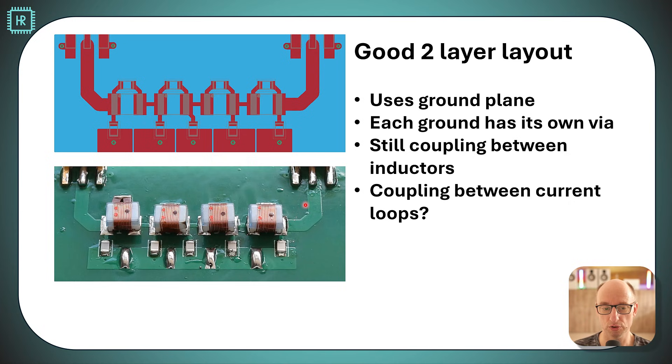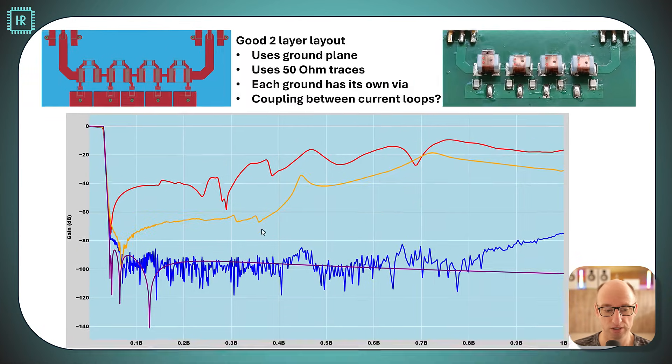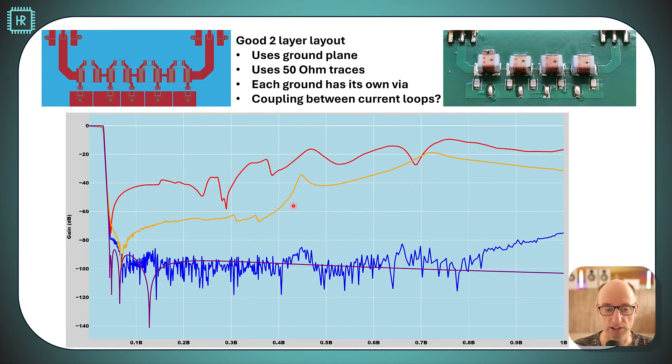Let's see what the measurement results of this new layout look like. The orange line is the response of this layout and the red line is the worst layout we've seen before. We see quite a big improvement but we still have quite a long way to go to the best possible layout we can make which is the blue one.